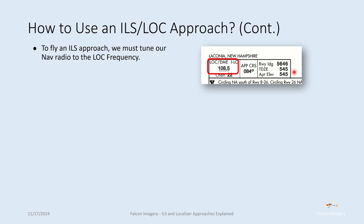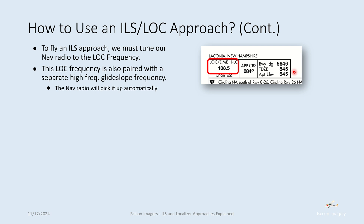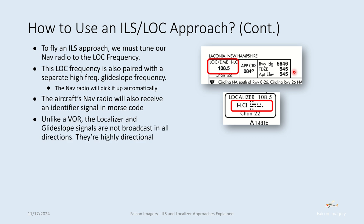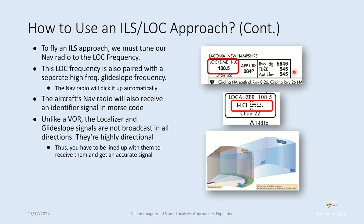To fly an ILS approach, we must tune our nav radio to the localizer frequency. For this particular approach, the localizer frequency is 108.5. This localizer frequency is also paired with a glide slope frequency that the nav radio picks up automatically. The aircraft's nav radio will also receive an identifiable Morse code signal, so once tuned in, turn the nav audio on to confirm the localizer is live. Unlike a VOR, the localizer and glide slope signals are not omnidirectional — they're highly directional, so you must be relatively lined up with them to receive an accurate signal.